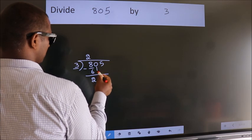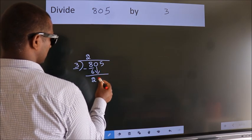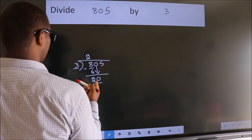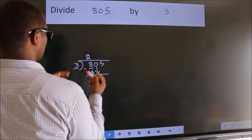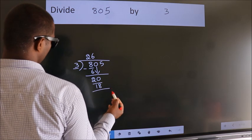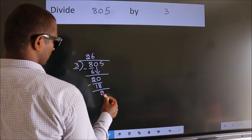After this, bring down the beside number. So 0 down, so 20. A number close to 20 in the 3 table is 3 times 6 is 18. Now we subtract. We get 2.